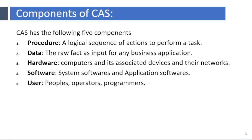The computerized accounting system has the following five components. 1. Procedure: a logical sequence of actions to perform a task. 2. Data: the raw fact as input for any business application. 3. Hardware: computers and their associated devices and networks.